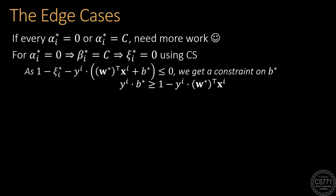Note that in this case, we cannot claim that this expression is equal to 0, since complementary slackness only tells us that alpha*_i times this expression is equal to 0. And since alpha*_i is itself equal to 0, this expression can take non-zero values.